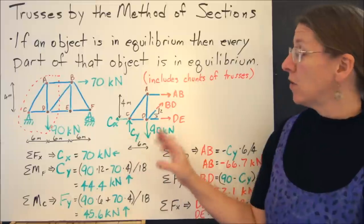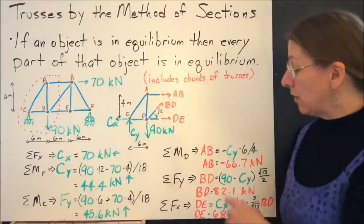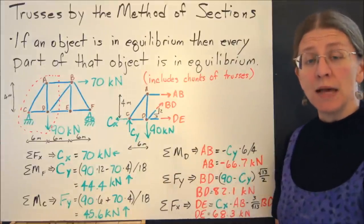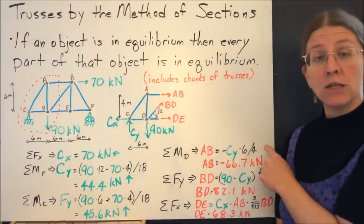Once I have those, I can isolate just the left half of the truss, and I can write the same sort of rigid body equations of equilibrium as before. So I can use the sum of the moments at D, and I get one equation in AB.